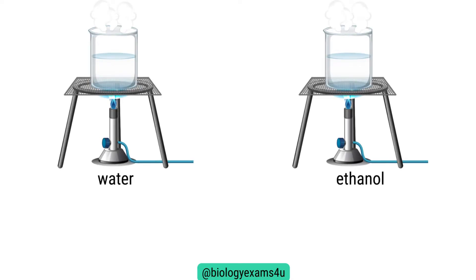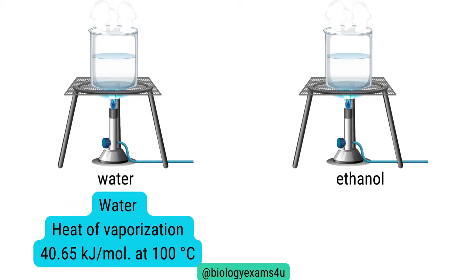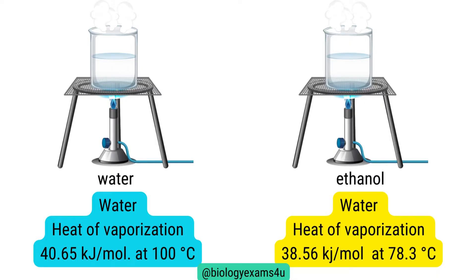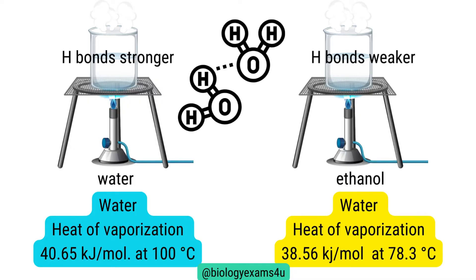Let us compare ethanol and water. To convert liquid water to gas at its boiling point, the heat of vaporization value is 40.65 kilojoules per mole at 100 degrees Celsius — that is water's boiling point. Whereas the boiling point of ethanol is 78.3 degrees Celsius, meaning hydrogen bonds in ethanol are weaker compared to those in water, so more heat energy is required to break water's hydrogen bonds and convert it from liquid to gaseous state.